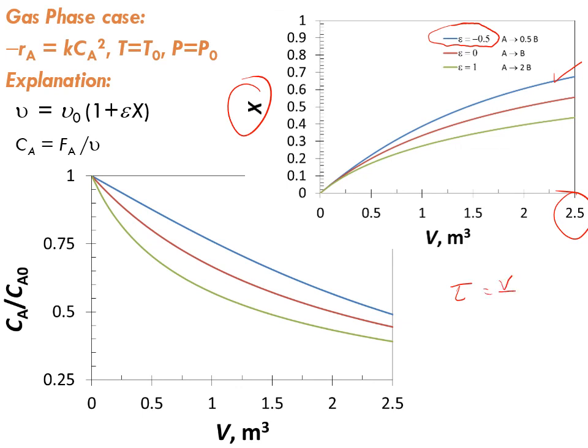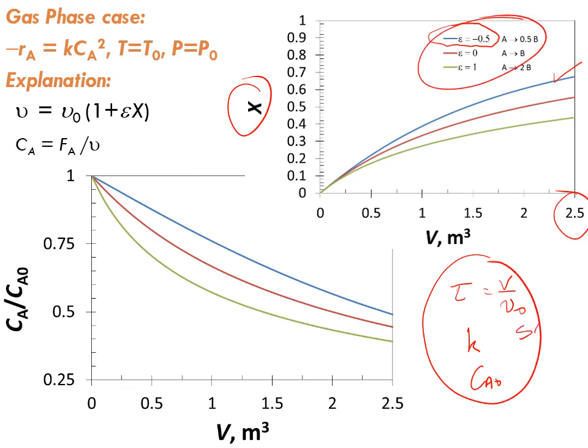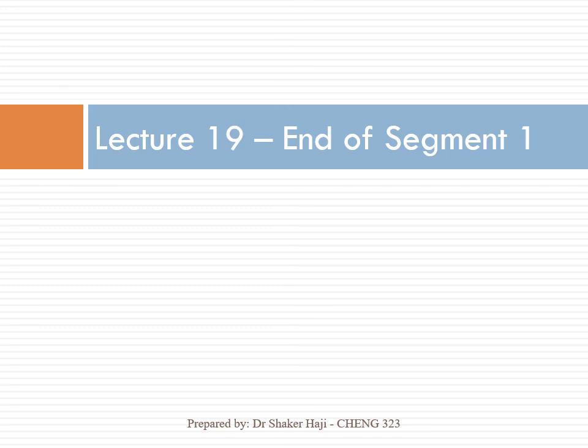That means you have the same Damköhler number, yet you are achieving higher conversions — this is an interesting result. Please do not explain the higher conversion by saying you have higher residence time; residence time is not a design parameter. We always look at the rate of reaction — everything is explained by the rate of reaction. We've reached the end of segment 1 of lecture 19; we'll meet you shortly in segment 2.